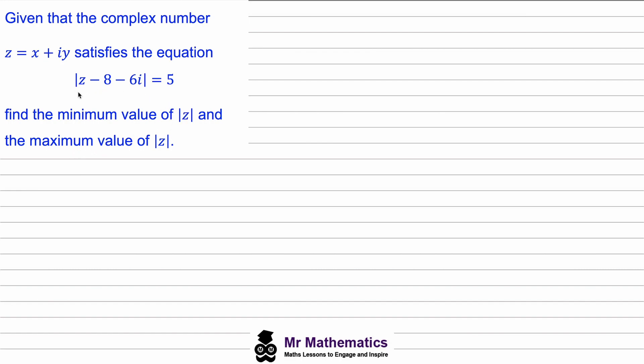Because we're given this form, this is similar to the magnitude of z minus z1 equals r. We know from a previous video that this will look like a circle of center z1 with a radius r.